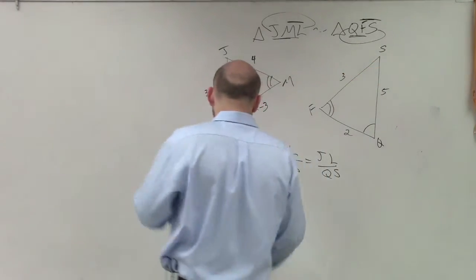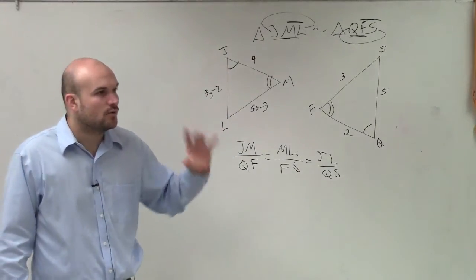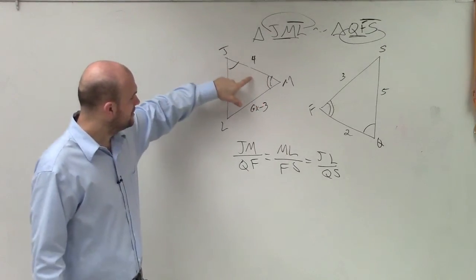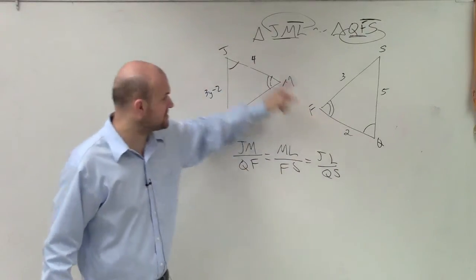Now, if I want to solve for x, what I want to do is determine what is the one ratio where I know both of the side lengths. So JM, right, compared to QF. Do I have no variables here, right? Do you guys agree?